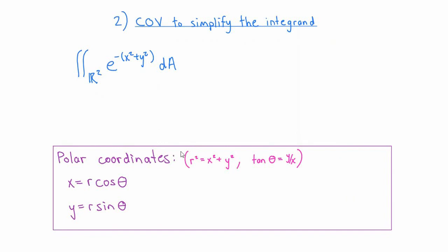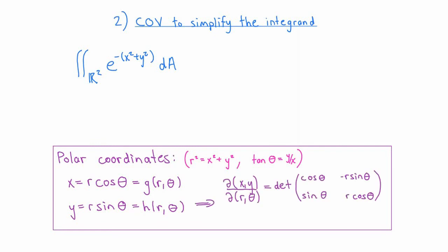There's actually more than one way to evaluate this integral, but it turns out that one of the easiest ways is to use polar coordinates. In polar coordinates we describe points in the plane by their distance from the origin, which we call r, and the angle theta that the position vector of the point makes with the positive x-axis. If we want to go from xy coordinates to r-theta coordinates, then we can use the equations in pink. We're more interested in going the other direction: once we know what r and theta are, x is r cosine theta and y is r sine theta. These are the functions we call g and h in our change of variables formula. The partial derivative of g with respect to r is cosine theta, the partial of g with respect to theta is minus r sine theta, the partial of h with respect to r is sine theta, and the partial of h with respect to theta is r cosine theta. Those form the entries of our Jacobian matrix, and taking the determinant, we find that the Jacobian determinant is equal to r.